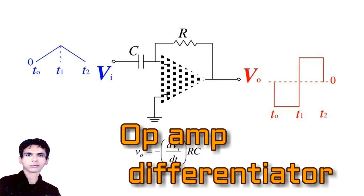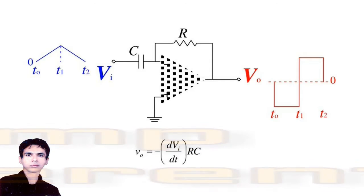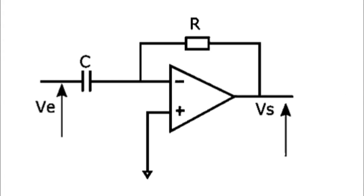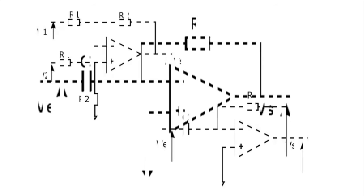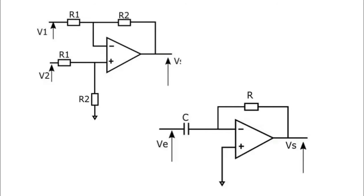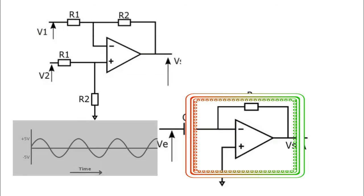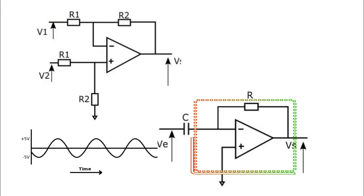8. OP-AMP DIFFERENTIATOR. Both differential amplifier and differentiator react to a voltage difference. But in the differential amplifier, the difference is between two voltages applied to the amp inputs at the same time, while in the differentiator, the difference is between two voltage values at adjacent moments of time.